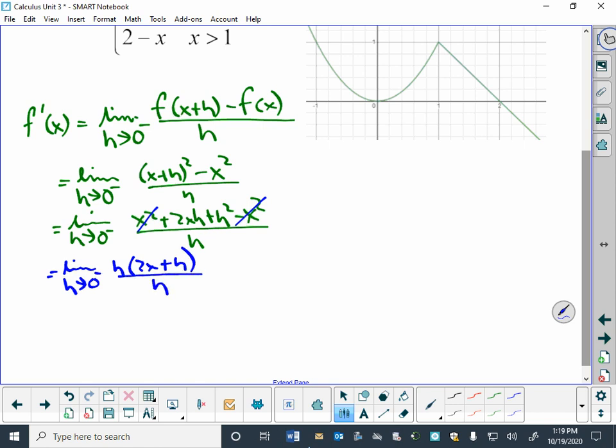And h divided by h is 1 as long as h is not 0, and we're just taking the limit, so that's okay. And we can put a 0 in for the h now, and it doesn't cause a problem, and we just get a 2x.